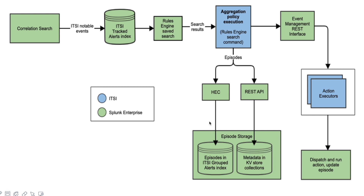All episode metadata is stored via REST events to the KV Store. The KV Store collection name is itsi_notable_group_system for system data, and itsi_notable_group_user for user-related data. These are the names of the collections used by the rule engine — the details of all indexes and KV Store collections will be provided in the comments.